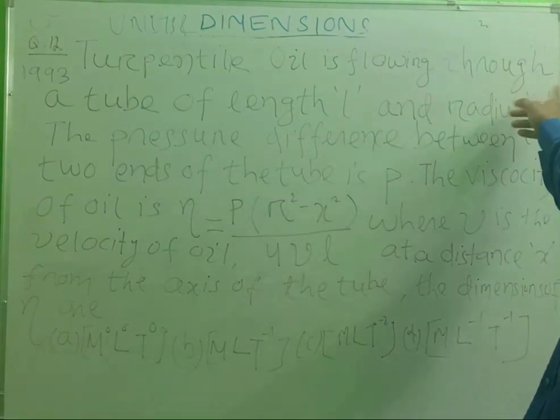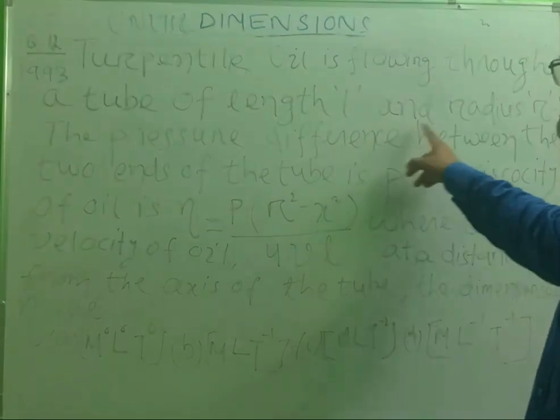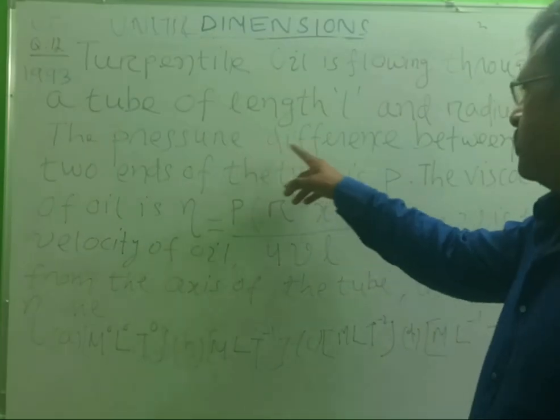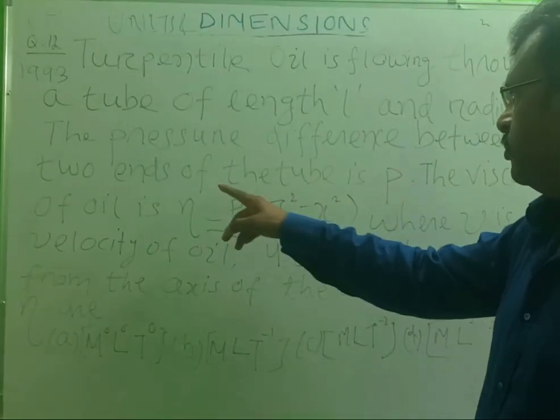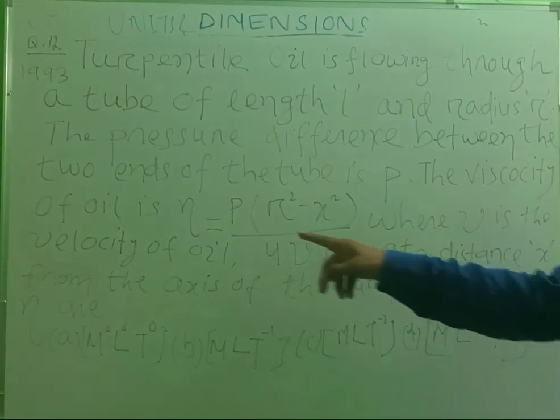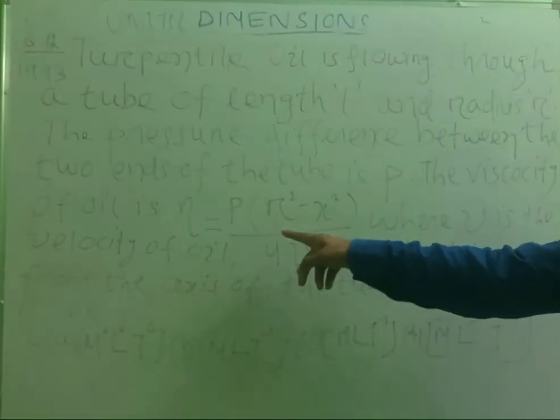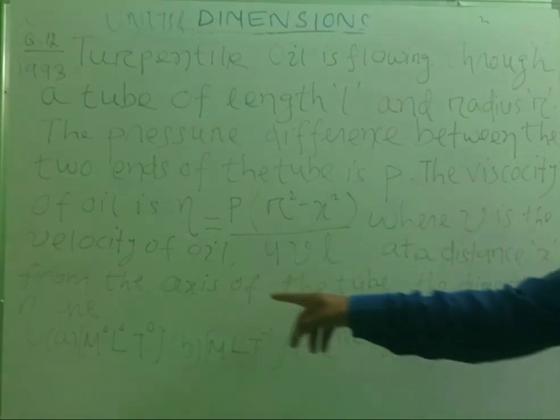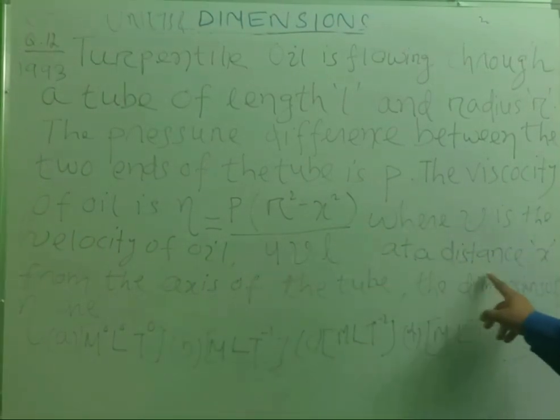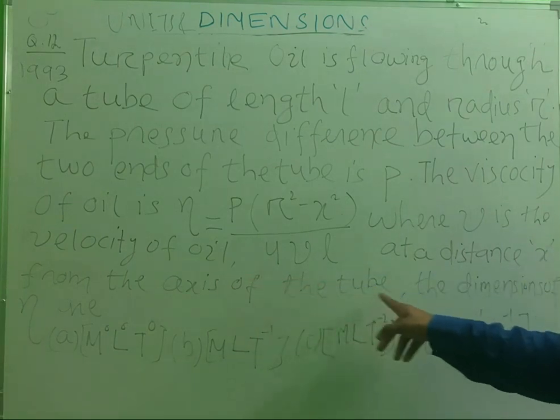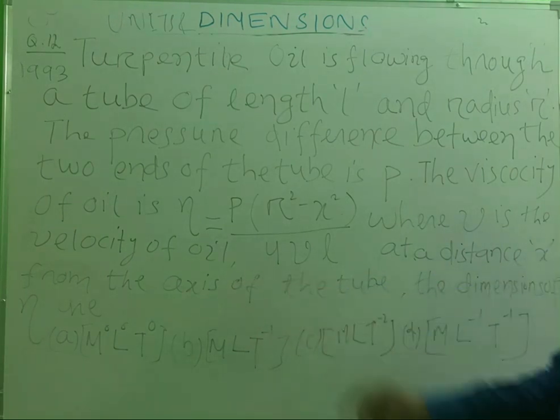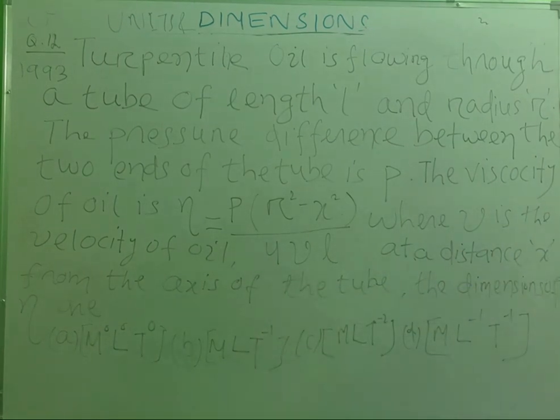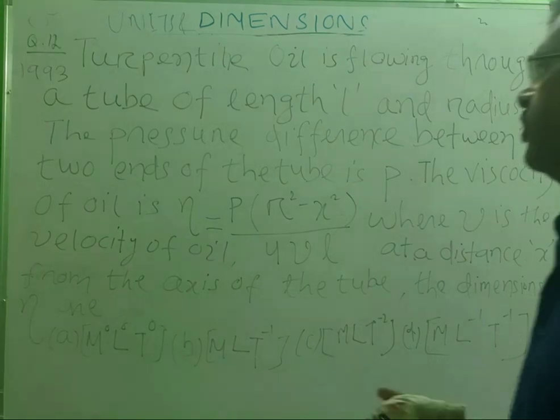Turpentine oil is flowing through a tube of length L and radius R. The pressure difference between the two ends of the tube is P. The viscosity of oil is eta equals P R square minus r square by 2VL. V is the velocity of oil at a distance r from the axis of the tube. The dimensions of eta, we have to find out the dimensions of the viscosity of the liquid eta.